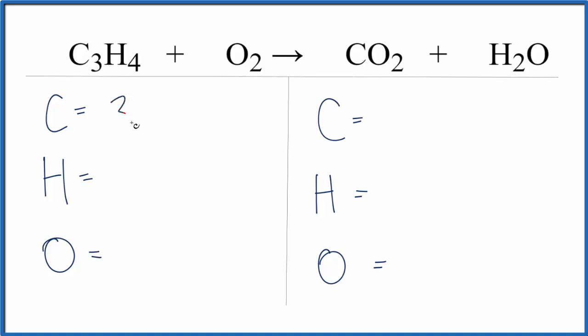We have three carbons, four hydrogens, and two oxygens. Over on the product side, we have one carbon, two hydrogens, and then we have two oxygens plus we have this one oxygen right here. So we have a total of three oxygen atoms.